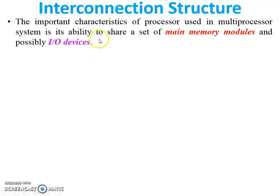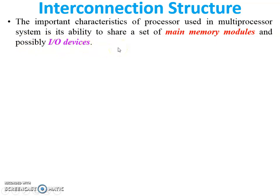In interconnection structure, we can first see the important characteristic of processors used in a multi-processor system: its ability to share a set of main memory modules and possibly I/O devices. There are more than two processors available in multi-processor systems, so all processors share the memory modules and also share the input/output devices.